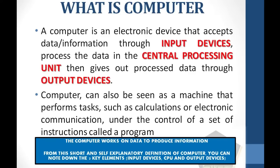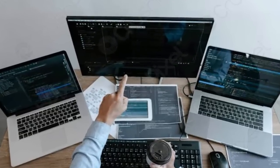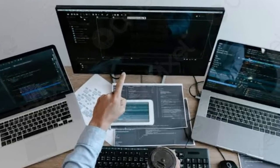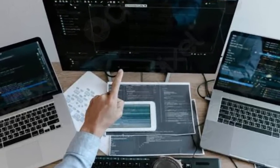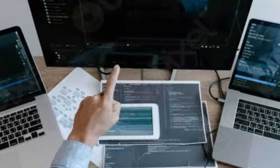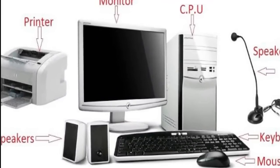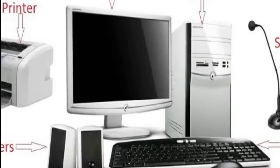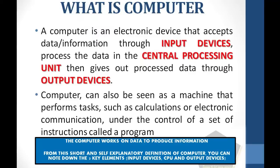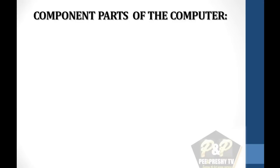Programs or applications usually reside within the computer and are retrieved and processed by the computer's electronics. The program results are stored in the computer memory and are transferred to output devices such as monitors or printers. The computer works on data to produce information. From this short and self-explanatory definition of computer, you can note down the three key elements: input devices, CPU, and output devices.